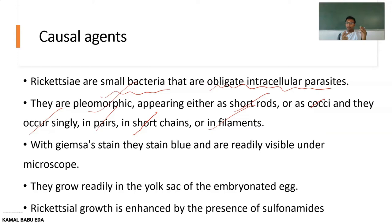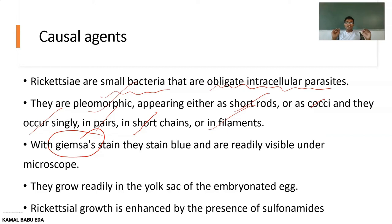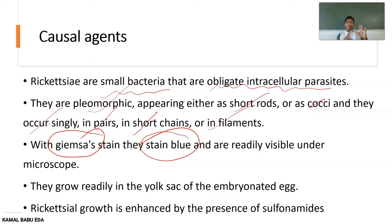They are appearing as single, in pairs, in short chains, and as filamentous forms. Whenever this rickettsial agent is Giemsa-stained, you can immediately see it under the microscope as a blue stain — they stain blue and are readily visible. They also grow readily in the yolk sac of the embryonated egg.